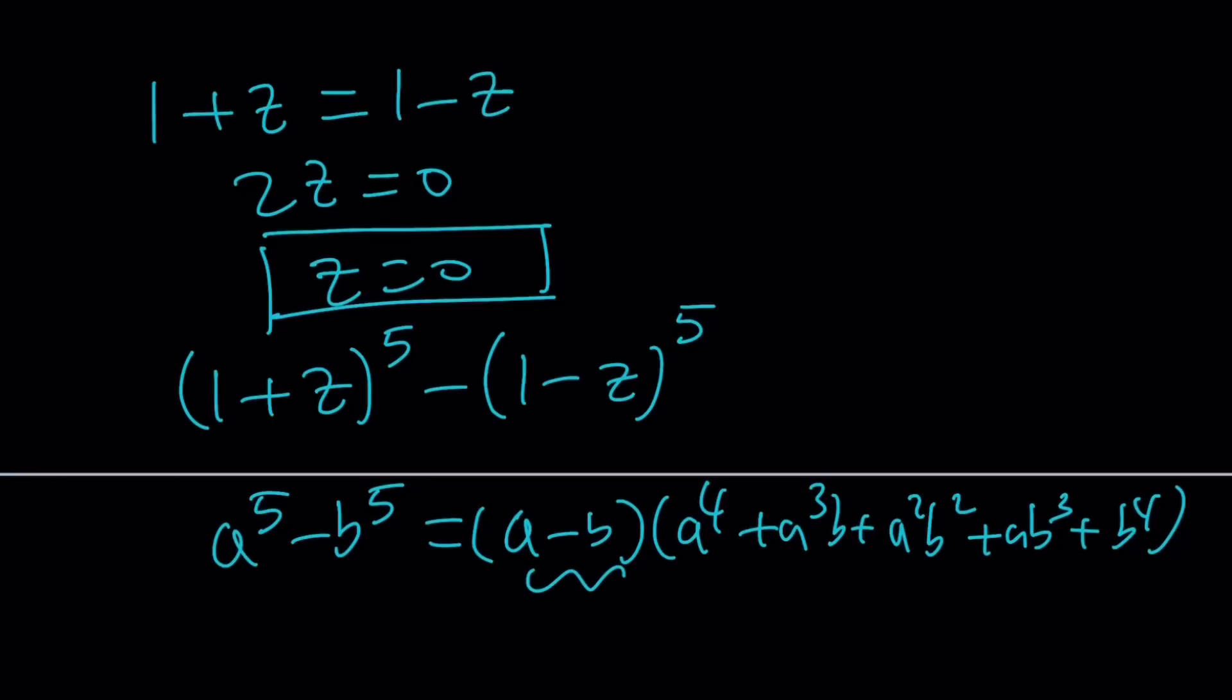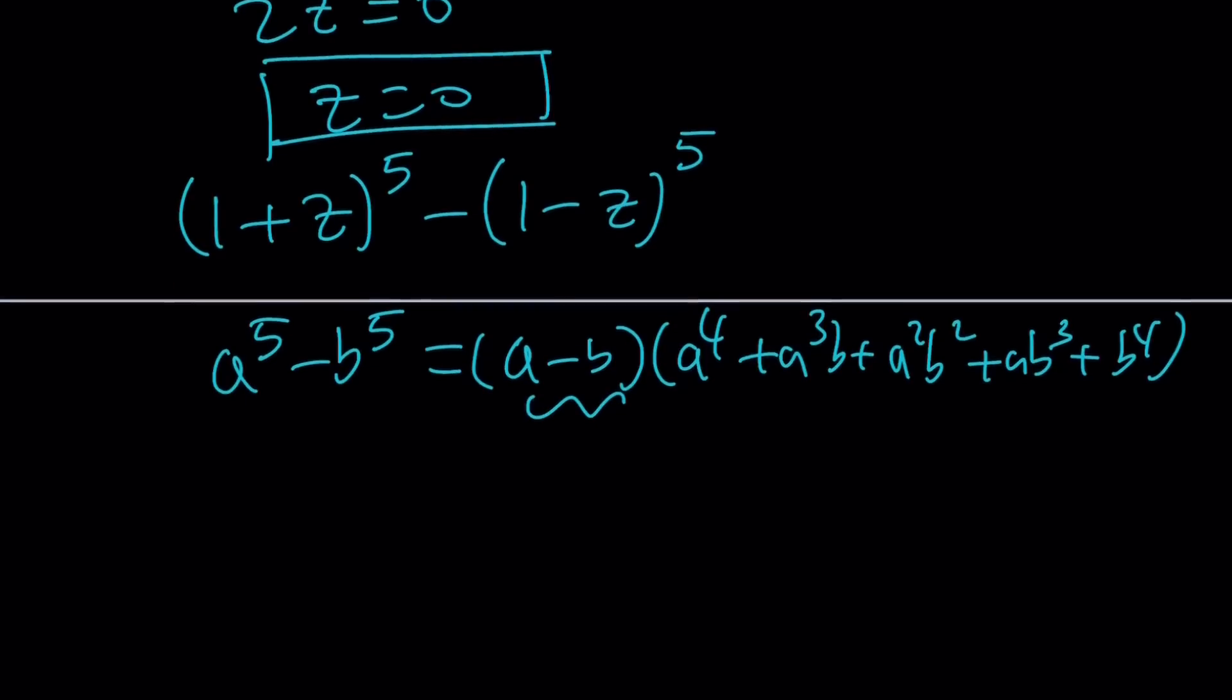Obviously, the first solution is going to give you z=0 as before, and the other one is going to be the quartic, which should give you the other solutions. So you can do that as well, or just expand it using the binomial theorem.